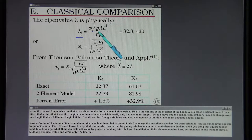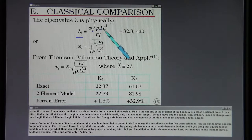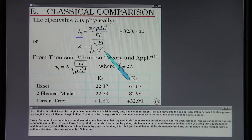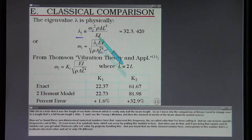Rho is the density of the material of the beam. A is a cross-sectional area. L is a little bit of a trick that it was the length of our finite element which is really only half the beam length. So as I move into the comparison with theory I need to change over to a length that's a full beam length L tilde. E and I are the Young's modulus and then the moment of inertia of the beam about its neutral axis.